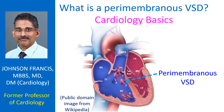Perimembranous VSD is the commonest type of ventricular septal defect. When there is a ventricular septal defect, blood shunts from the left ventricle to the right ventricle as the pressure in the left ventricle is higher. This leads to increased pulmonary blood flow.